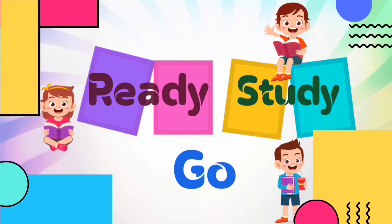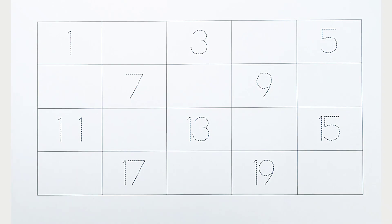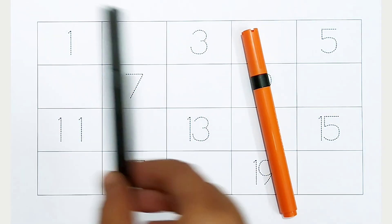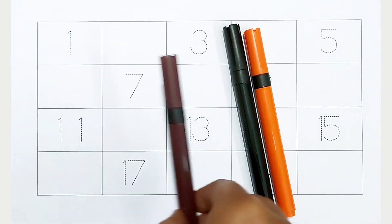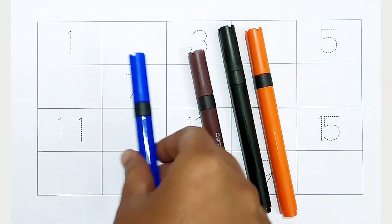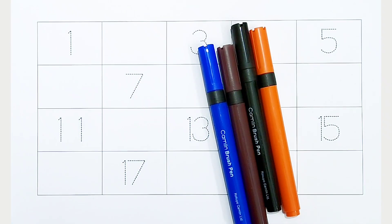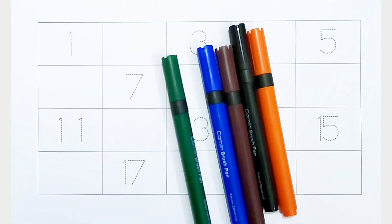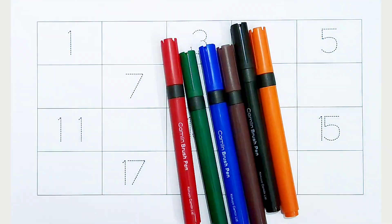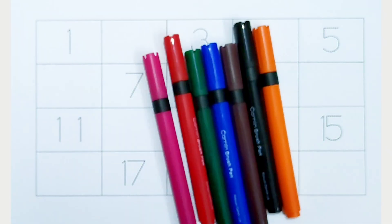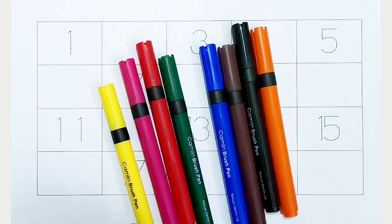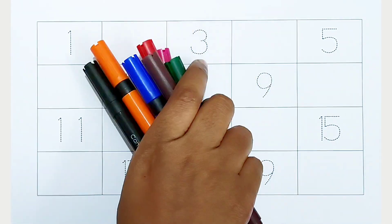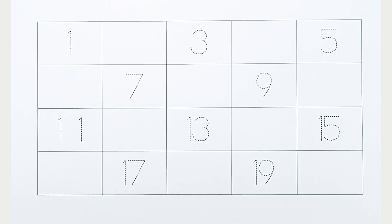Orange color, black color, brown color, blue color, green color, red color, pink color, yellow color. Hi kids, today we can learn the numbers from 1 to 20.